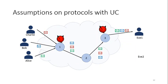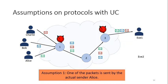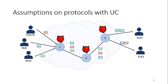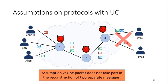To derive our results, we impose some assumptions on user coordination. First, one of the shares is sent by the actual sender Alice. This is because user coordination happens at pre-setup, when Alice's message is unavailable, so without Alice sending information about the message, it cannot be retrieved. Second, one packet does not take part in the reconstruction of two separate messages — so Bob's blue packet should not be used to reconstruct both Alice's message and Charlie's message.